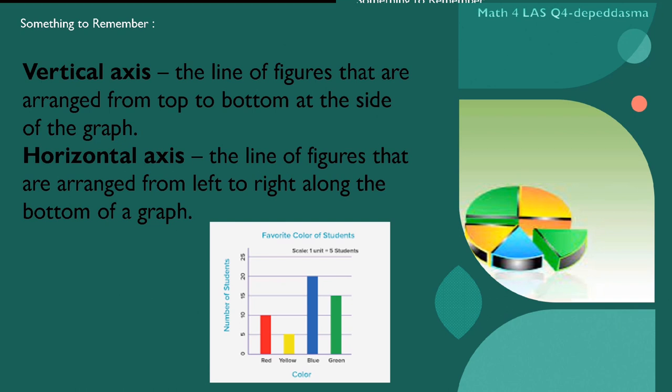Vertical axis. The line of figures that are arranged from top to bottom at the side of the graph. Horizontal axis. The line of figures that are arranged from left to right along the bottom of the graph.